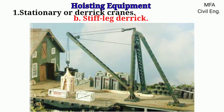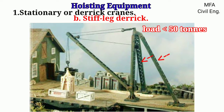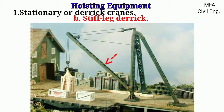When the load becomes less than 50 tons, the guy ropes are replaced by truss structures, which form the stiff leg derrick. It consists of a mast which can rotate and a boom. A stiff leg derrick is used for loads from 7 to 50 tons.